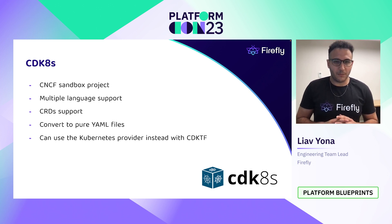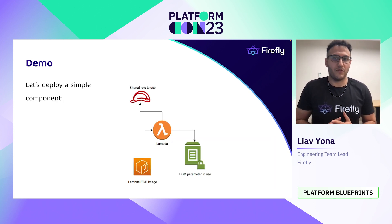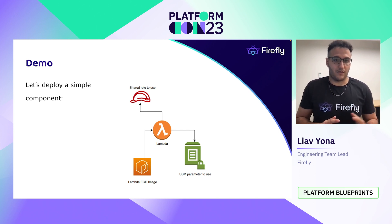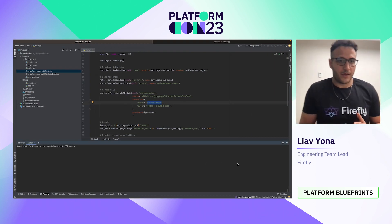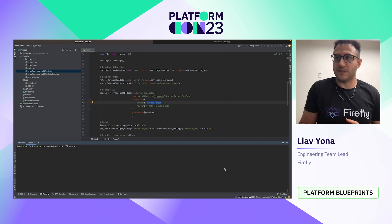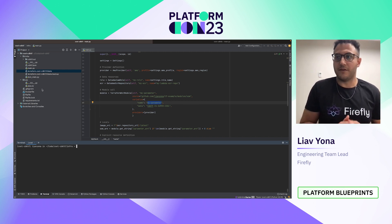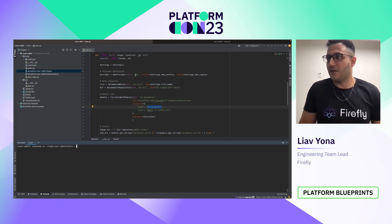Now let's have a quick demo showing how we created a Lambda using an ECR image as a data resource. We're also creating an SSM parameter, and we will see a CDK Kubernetes stack as well. So here we can see our main file — this is the main file of our infrastructure. We also have the application right here.